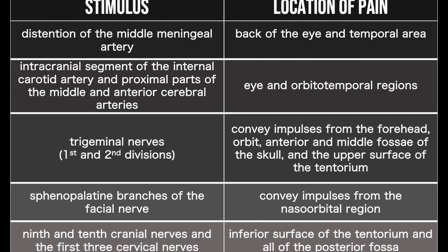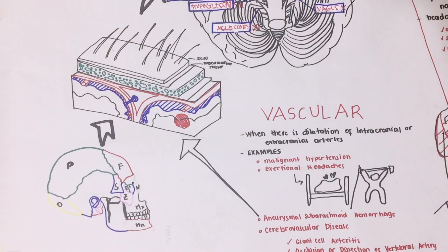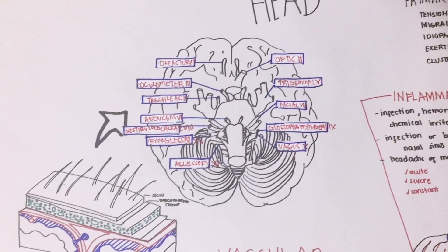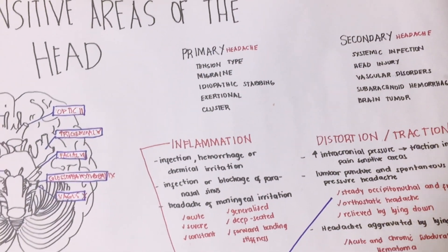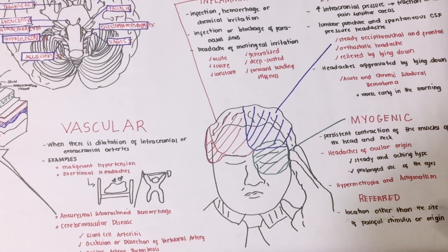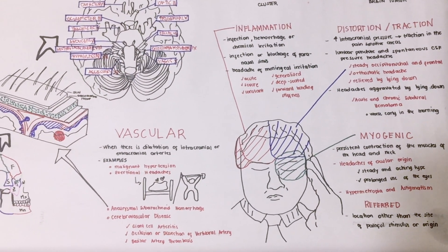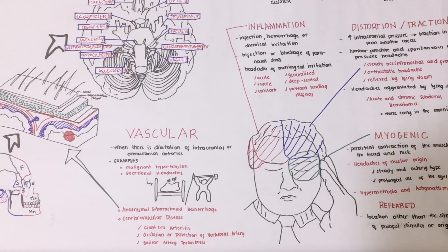Ninth and tenth cranial nerves and the first three cervical nerves: inferior surface of the tentorium and all of the posterior fossa. So in summary, we looked at the headaches that can be primary and secondary, a brief overview of the skull and sinuses, as well as the mechanisms of headache.